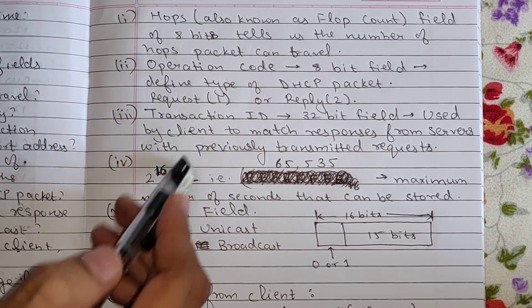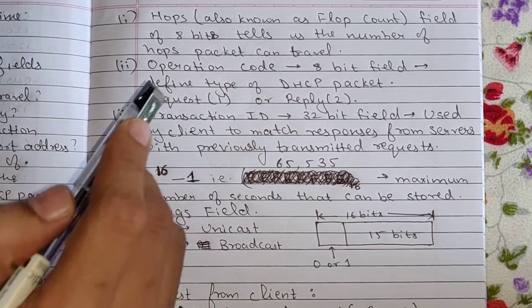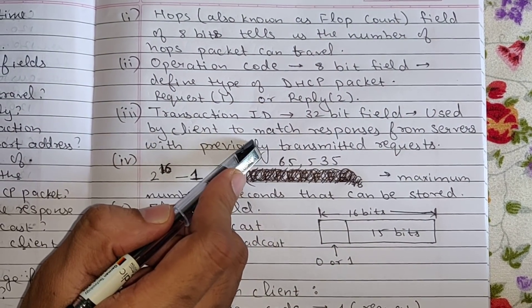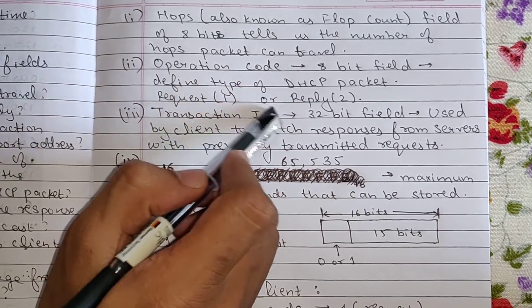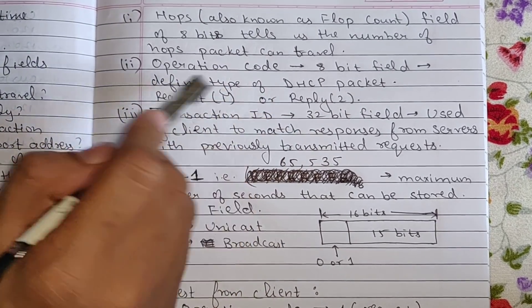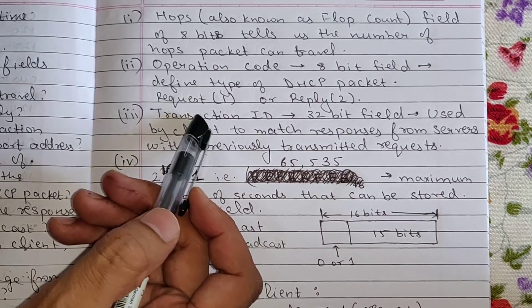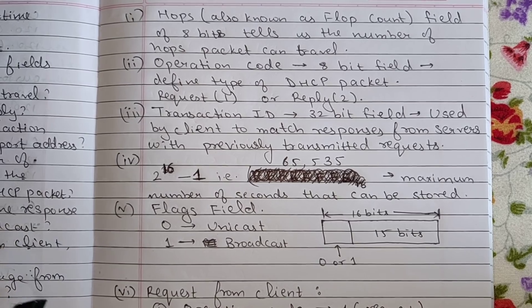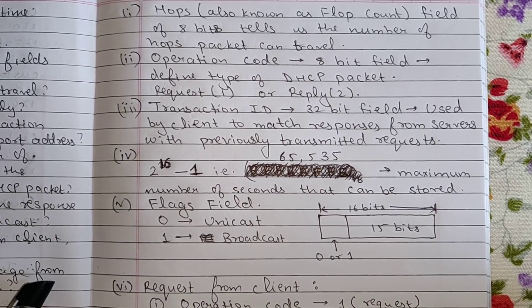So if I have made multiple requests, let's say 3 or 4, so each request will have a transaction ID and when I get a reply from the server it will again contain that transaction ID. So I have to match the transaction ID to check the response that came was of which request that I made. The next question is what is the maximum number of seconds that can be stored.